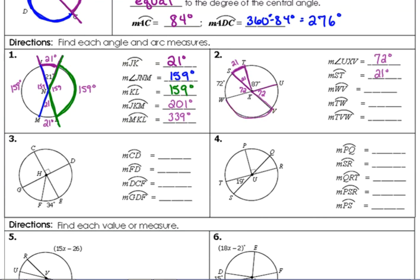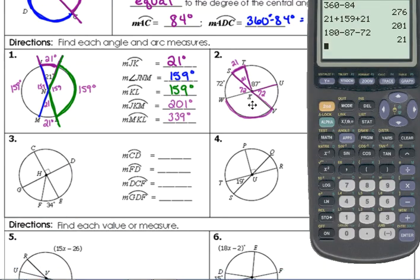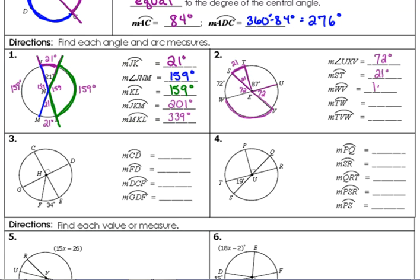How about arc WV? We can do 180 minus 72 because SV is a diameter. So 180 minus 72 is 108 for WV. That also means that central angle is 108. Arc TW is 21 and 72, so 93.